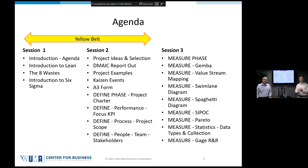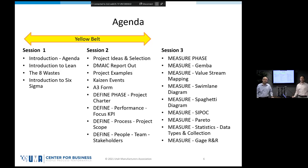You're going to have to make some sort of process improvement to something that is part of your job — whether you're an operator on the production line, a materials person, maintenance person, front office person working in human resources, marketing, sales, customer management — whatever your world is, we're going to find a way to improve that process. Just make something better. That's what this is all about.